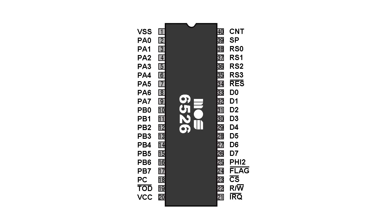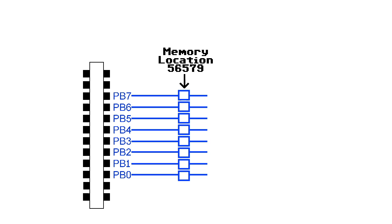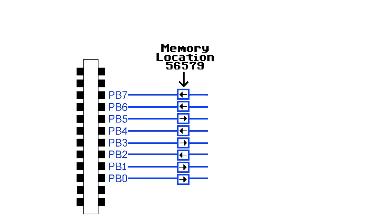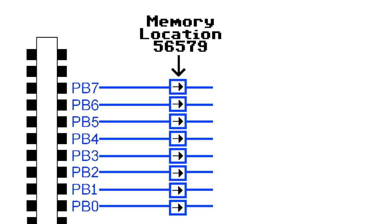Once we hook up the LCD to the user port, how do we control it? The 6526 chip occupies a few bytes in the C64's memory map. There are only two memory locations relevant to us. The first is 56579 — this sets the direction for all 8 lines on the user port. Because it is an 8-bit register, each bit represents one of the 8 data lines. Setting a bit to 0 makes that line an input; setting it to 1 makes it an output. For our purposes we need output, so we can set them all by storing the value 255 in this memory location.